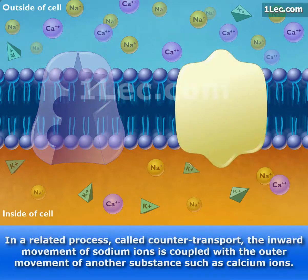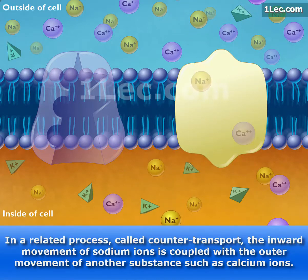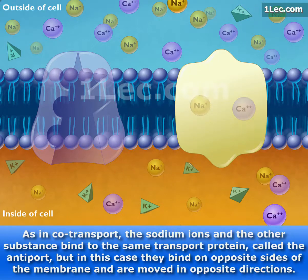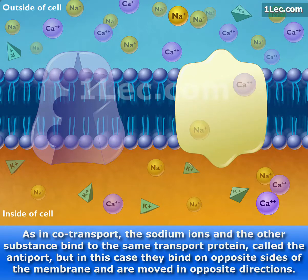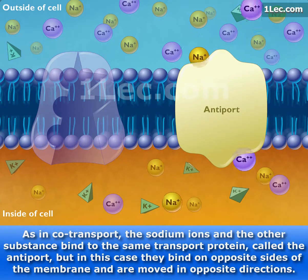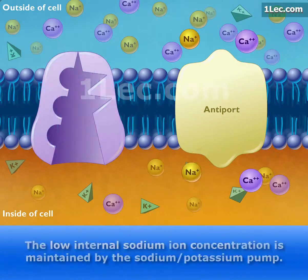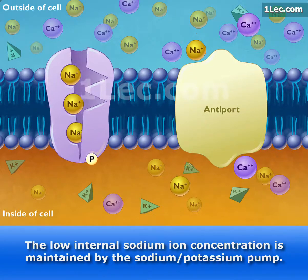In a related process called counter-transport, the inward movement of sodium ions is coupled with the outward movement of another substance such as calcium ions. As in co-transport, the sodium ions and the other substance bind to the same transport protein called the antiport, but in this case they bind on opposite sides of the membrane and are moved in opposite directions. The low internal sodium ion concentration is maintained by the sodium-potassium pump.